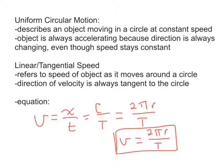To clarify the variables: r is the radius, T is the period — which I'll define on the next slide — and v is your speed, the same symbol we've used before.